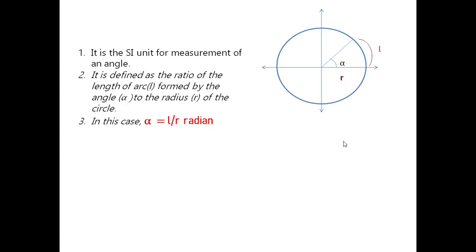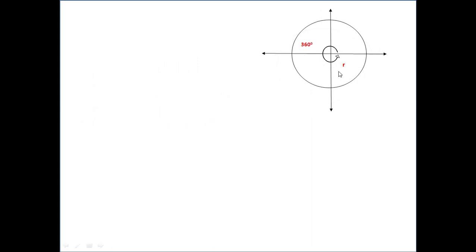Now for the next part, if we consider a circle of radius r then this total angle becomes 360 degree.